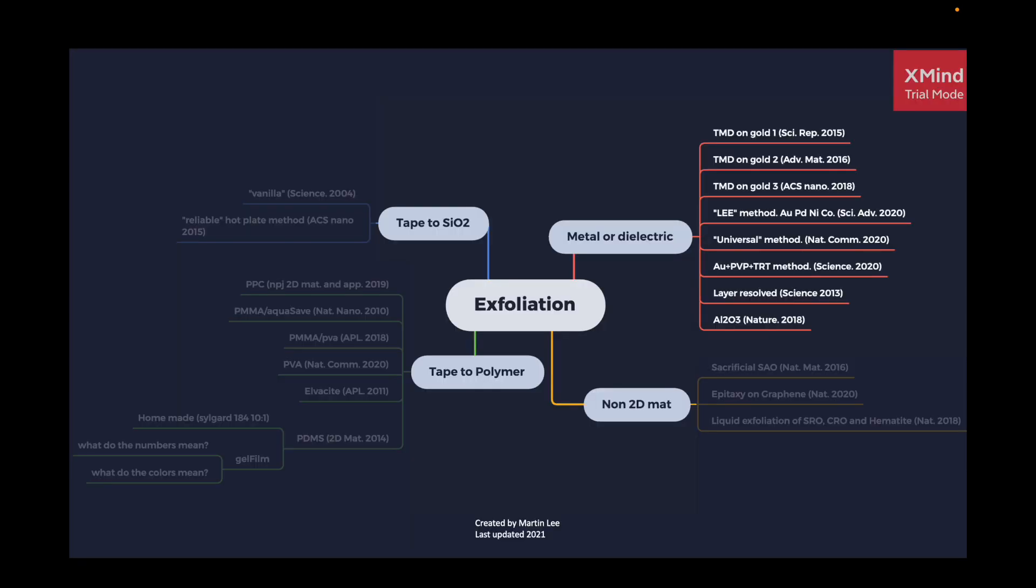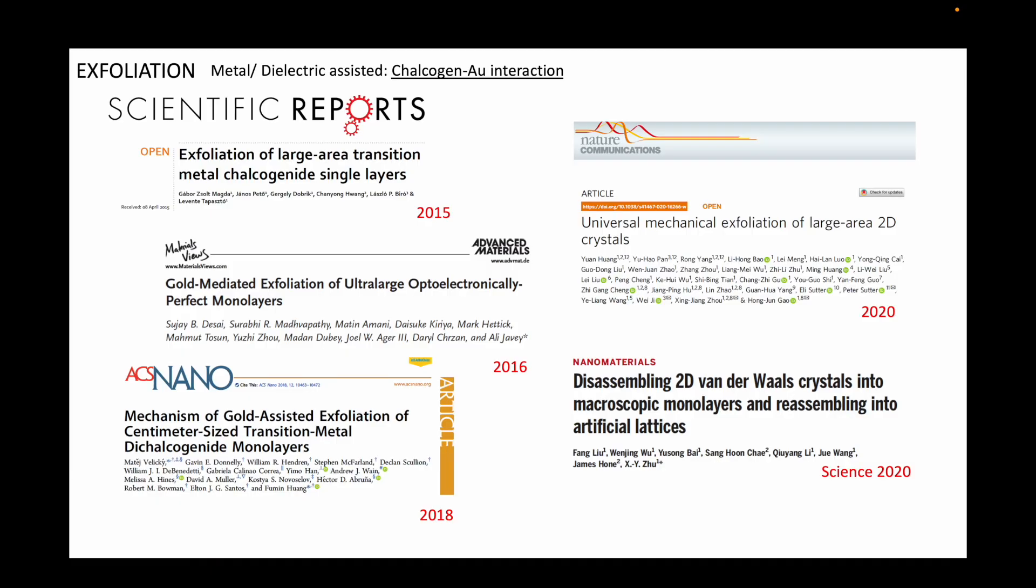Moving on to the next section, now I will be listing the exfoliation using metal or dielectric deposition. There are several mechanisms at play, such as interfacial strain, chalcogen-gold interaction, and electron doping from the metal. These methods have been extremely successful, and there have been many variations of these methods being reported, because they tend to allow researchers to exfoliate ginormous monolayer flakes even reaching centimeters or whatever the size of the mother crystal is.